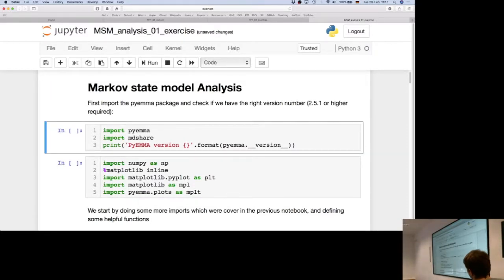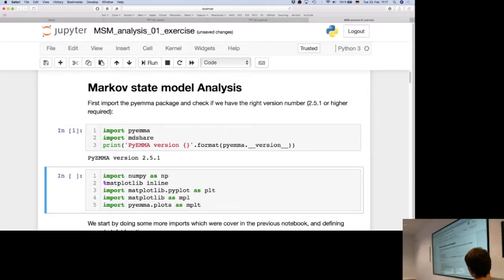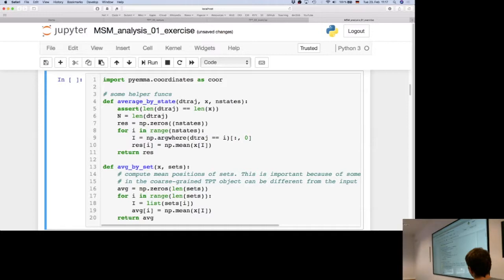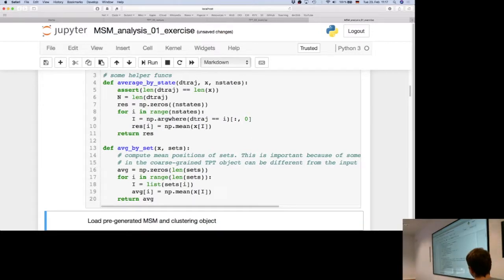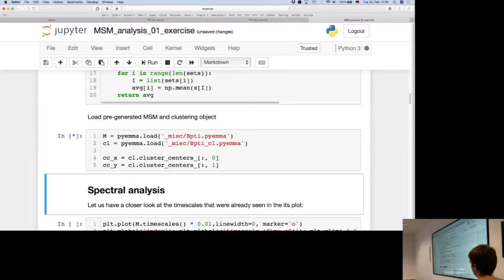So let's run through the notebook. I hope everybody has opened it now. We are just doing some basic imports, checking whether we have the right version of FIEMA. And then we are doing some more imports. And then we are defining some functions that will help us later. And then we will load in a Markov state model from files and a clustering object. So we will not spend any time on building Markov state models. We will just assume that we have one available and the cluster syntax available.